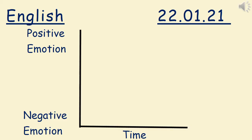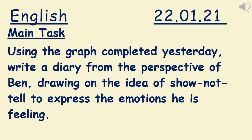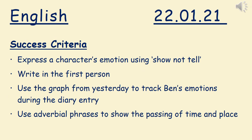As we're going to look at emotions today, you're going to need your emotions graph from yesterday's lesson, so make sure you have that handy. Here's today's main task: using the graph completed yesterday, write a diary entry from the perspective of Ben, drawing on the idea of show not tell to express the emotions he is feeling. Success criteria: express a character's emotions using show not tell; write in the first person; use the graph from yesterday to track Ben's emotions; and use adverbial phrases to show the passing of time and place.